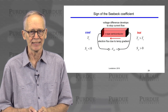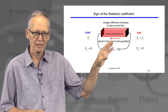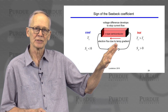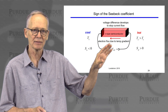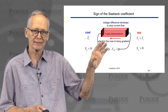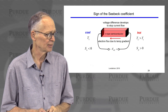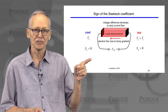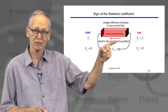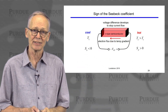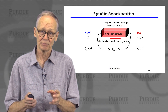We can think about the sign of the Seebeck coefficient in a very simple way. Consider a semiconductor slab with the right side being hot and the left side being cool. Electrons are going to want to diffuse away from the hot side towards the cool side. A positive voltage will have to develop to pull the electrons back and stop the current flow under open circuit conditions. Because the voltage difference is minus the Seebeck coefficient times the temperature difference, we conclude that the Seebeck coefficient for an n-type semiconductor is negative. Similar arguments tell us that the Seebeck coefficient for a p-type semiconductor is positive.